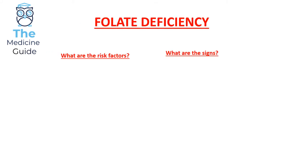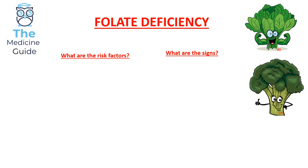There are only two presentations of macrocytic megaloblastic anaemia: vitamin B12 deficiency or folate deficiency. Folate may also be referred to as vitamin B9 deficiency — these terms are used interchangeably, so be aware of this in your exams. Sources of folate in our everyday diet include spinach, broccoli, and animal proteins such as liver.